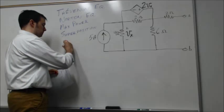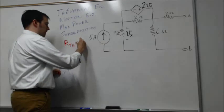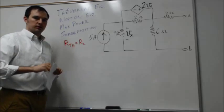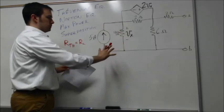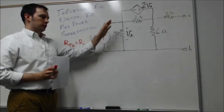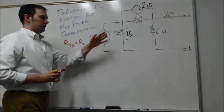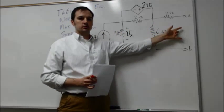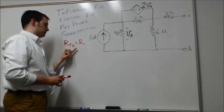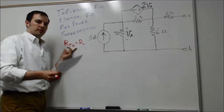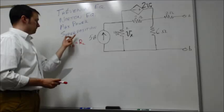We talked about maximum power transfer. The main point is that in order to get maximum power transfer, the load resistance needs to be equal to the Thevenin equivalent resistance. If I apply a load across terminals a and b, I want that load to have the same resistance as my Thevenin resistance — that delivers maximum power to the load.